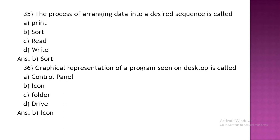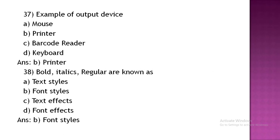Example of an output device: Option A: mouse. Option B: printer. Option C: marker. Option D: keyboard. The correct answer is Option B, printer.